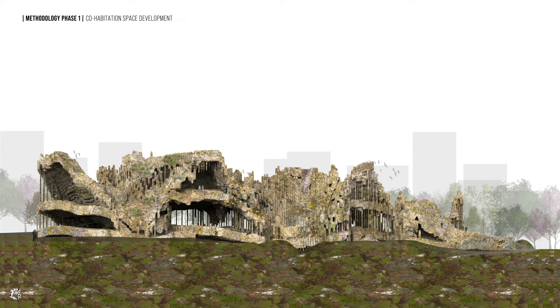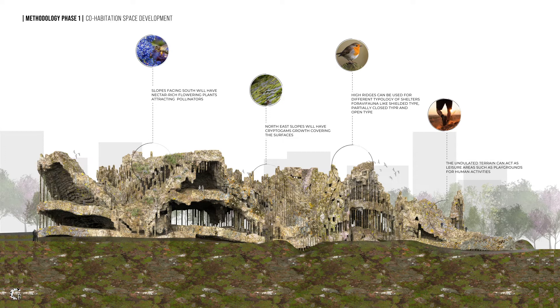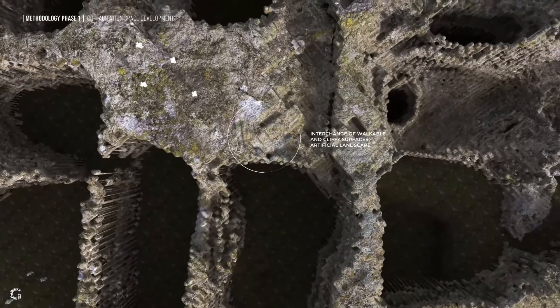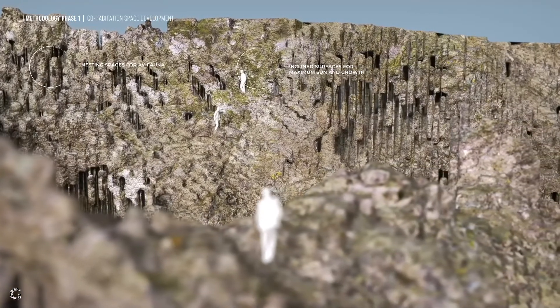Different parts of the habitat accommodate different species and functions. Slopes facing northeast have maximum moss growth; slopes facing south have nectar-rich flowering plants as they need maximum sun exposure. In the high ridges of the built space, different typologies of avifauna shelters are demarcated. Undulated areas on the terraces or slopes could act as terrain for human leisure activities. Finally, some design and structural elements could also act as support systems that nurture green growth on them. The architecture produced intends to maximize the qualities of unmanicured wilderness and ambiguity — the former enables the organic development and activity of species, the latter experientially changes the inhabitants' predisposition towards the natural and pushes towards ecological awareness through cohabitation.